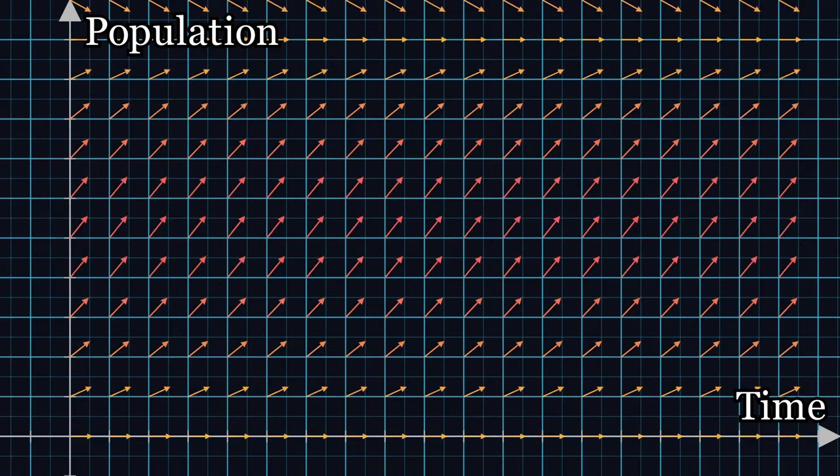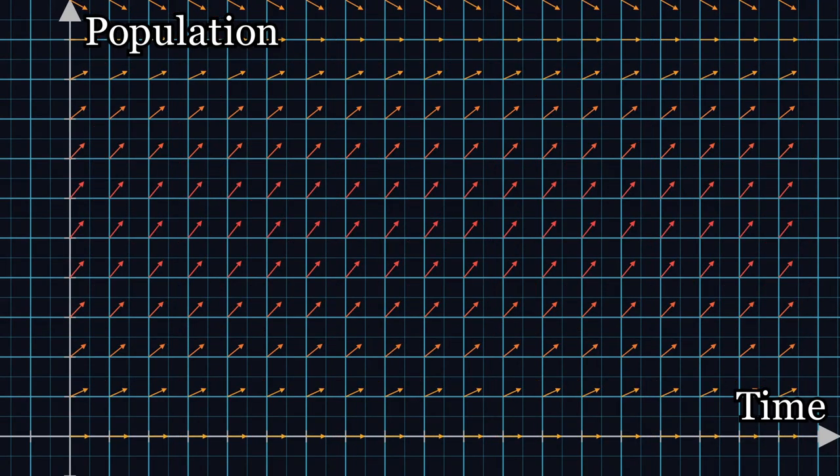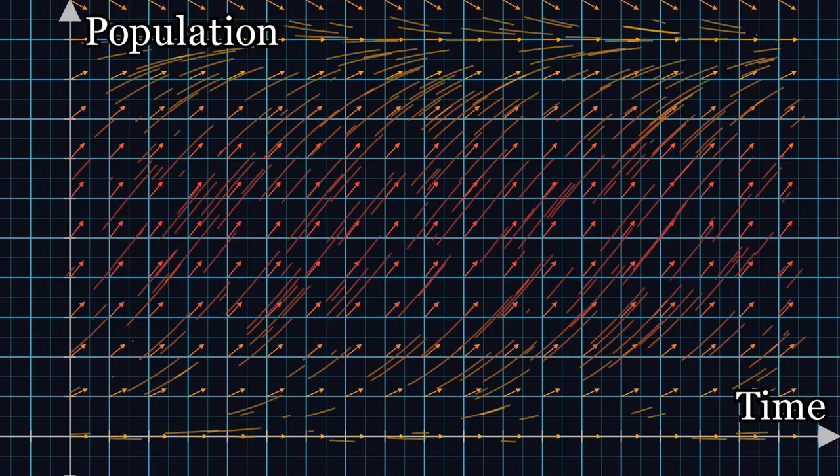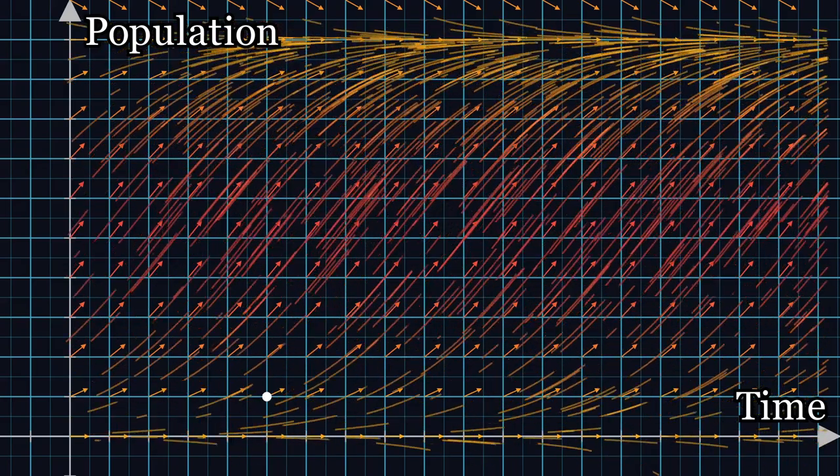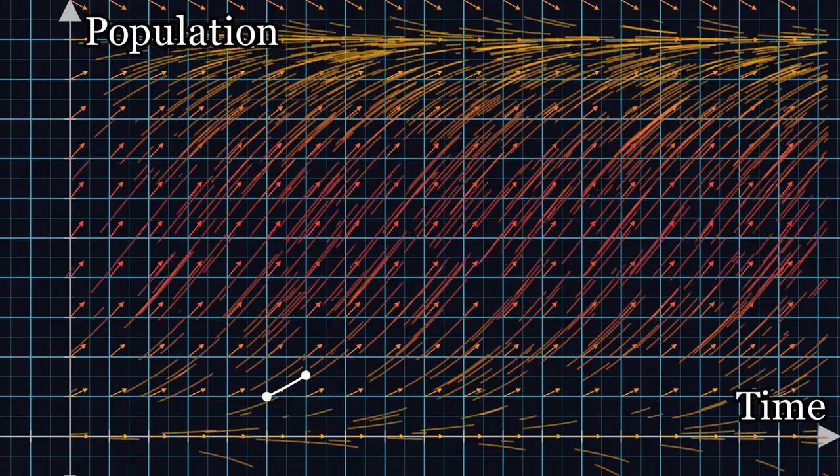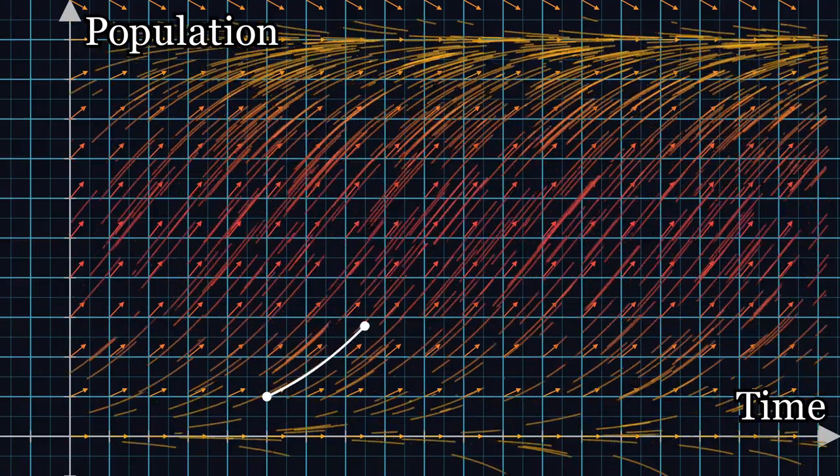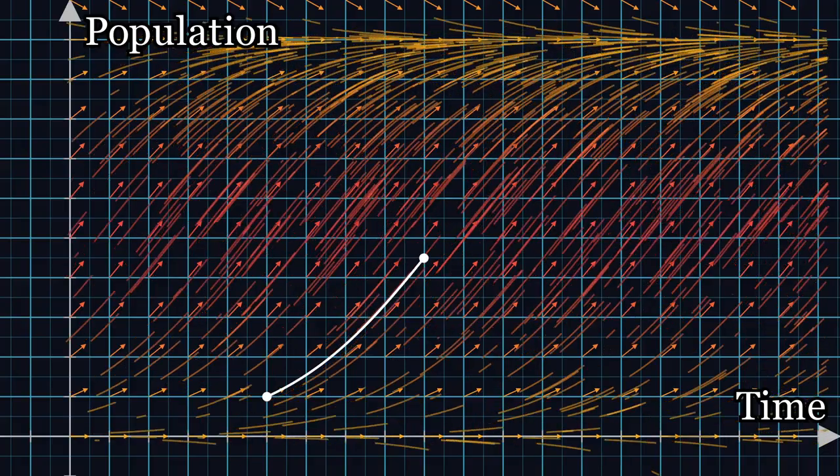Scaling things down a bit and letting colors stand in for magnitude, we can notice a few things. For one, there's a sort of symmetry within each column of arrows. That, of course, is purely a consequence of our differential equation—it doesn't depend on time. But more so, you can witness the beautiful crescendo that emerges from flow.